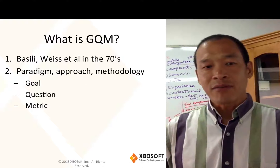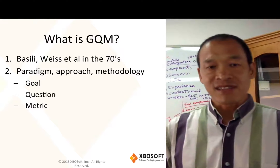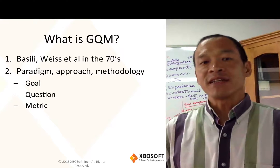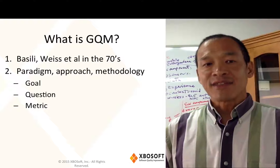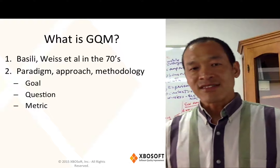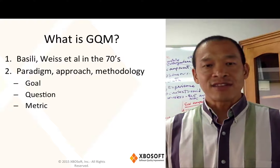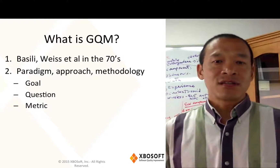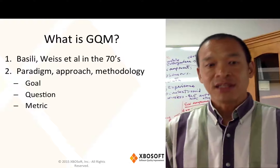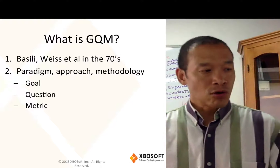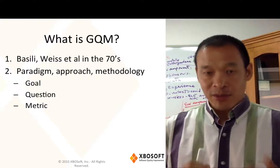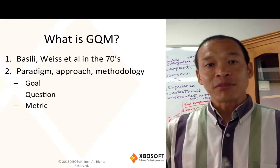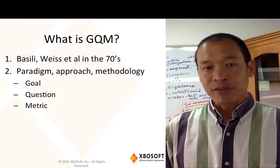So what is GQM? GQM was developed by Victor Basili and David Weiss and some other guys in Germany back in the 1970s. They developed this approach for NASA, developing software for NASA and trying to develop software metrics. Some people call it an approach, some people think of it as a paradigm or methodology. But basically, GQM stands for goal, question, and metrics. I'm going to go over each of these in detail and give you some examples of how we can apply it to measuring and improving our Agile process.